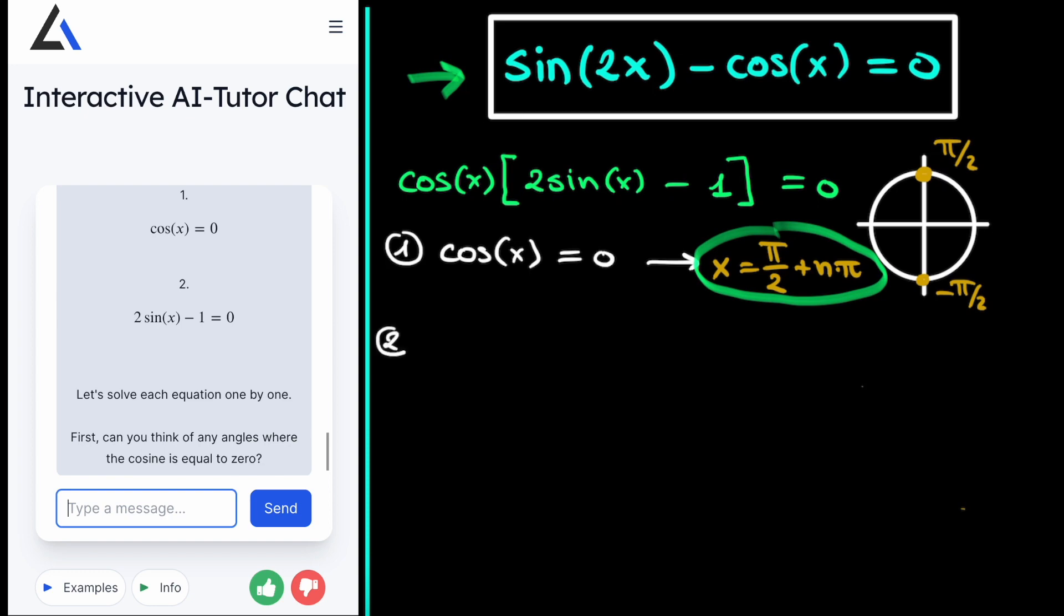And this brings us to the second sub-problem, namely when this factor between brackets is equal to 0. So if we write this down in an equation, we get 2 times the sine of x minus 1 has to be equal to 0.